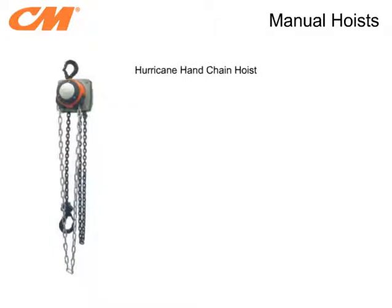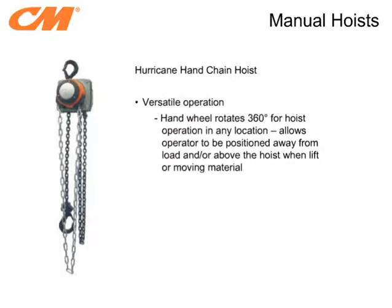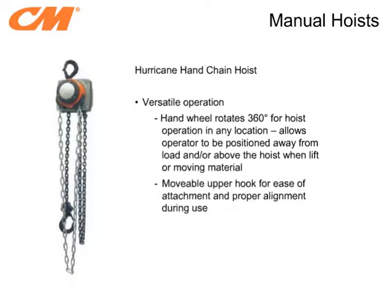The last hoist we will cover is the Hurricane Hand Chain Hoist. This hoist is like no other hand chain hoist on the market due to its unique 360-degree hand wheel rotation. This rotation allows the user to operate the hoist from any position, even from above the unit. The operator can be located out of the way of the load being moved or lifted. This flexibility is further enhanced by a movable top hook, which helps ensure proper hoist alignment during use. The Hurricane also comes with a load limiter as a standard option.